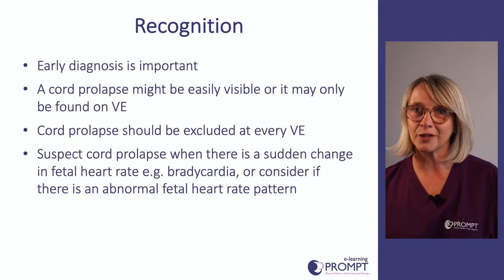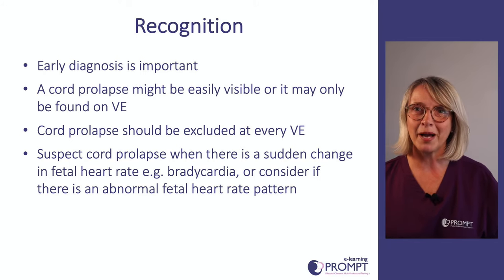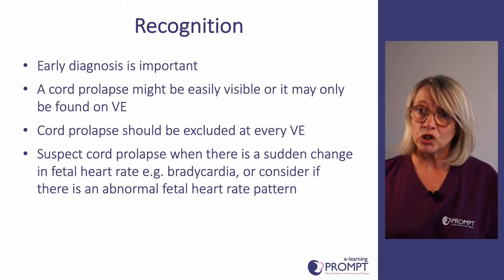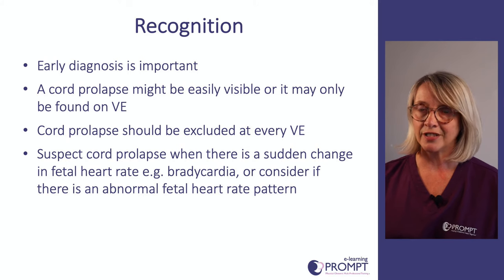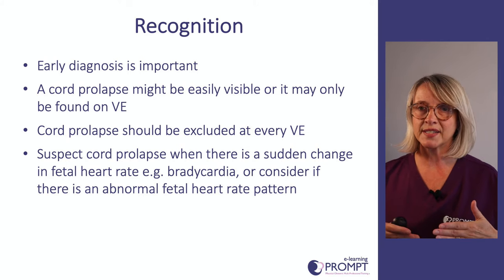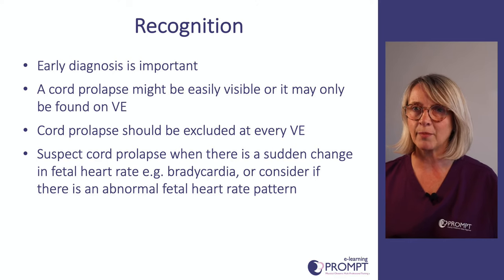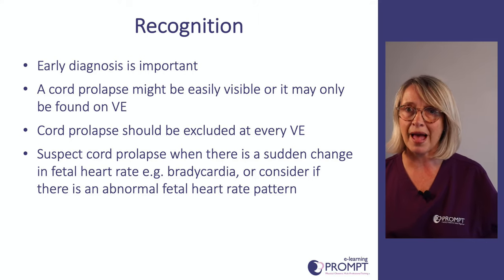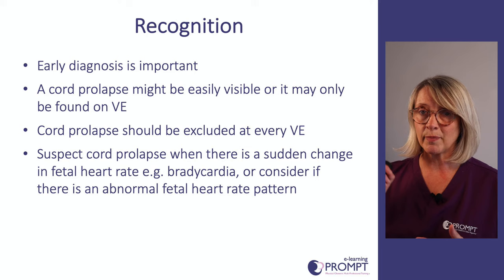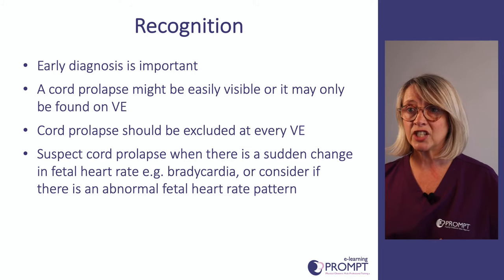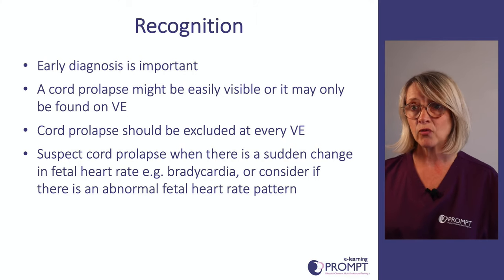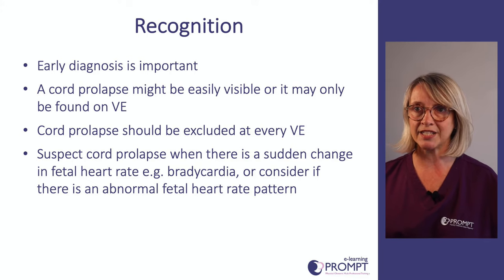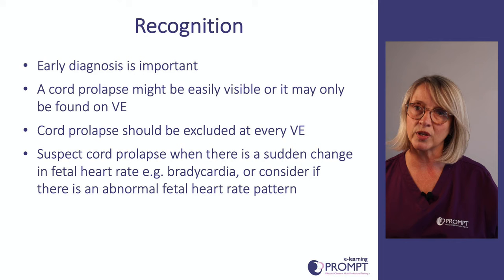Recognition: early diagnosis is important. A cord prolapse might be easily visible or may only be found on vaginal examination where you can't actually see anything. Cord prolapse should be excluded at every vaginal examination. Cord prolapse should be suspected when there is a sudden change in the fetal heart — for example a bradycardia or any abnormal fetal heart rate pattern. A speculum or digital vaginal examination should be performed when cord prolapse is suspected regardless of gestation. Management of an abnormal fetal heart rate pattern is one aspect identified in perinatal death associated with cord prolapse.